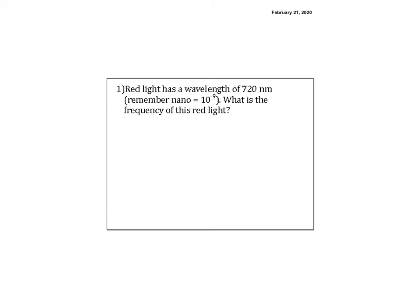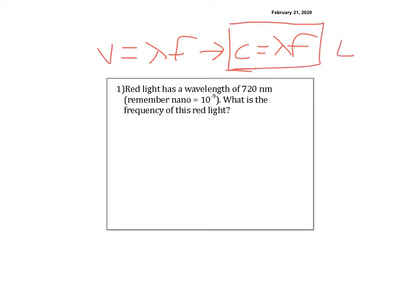This is Unit 7, simple problems on light waves and the energy found in light waves. Let's remember the equations we're going to use. We're using the wave equation, which is V equals lambda F, but we transform that into C equals lambda F because C is the speed of light. We can also look at energy using the equation E equals HF. Both the values of C and H are given on the paper.